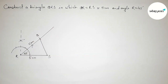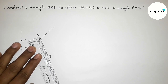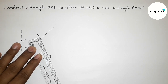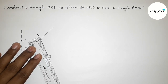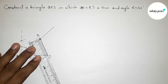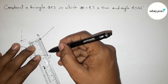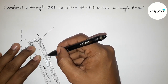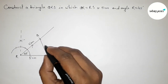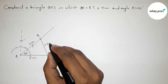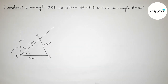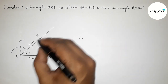Now measuring the length QS with the help of a scale. This is approximately 1, 2, 3 — so QS equals approximately 3.8 centimeters.